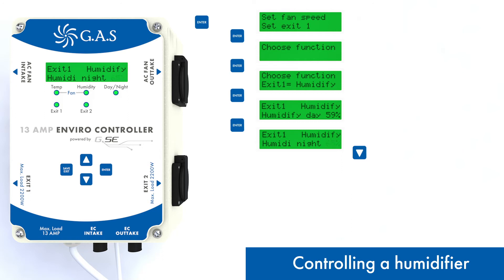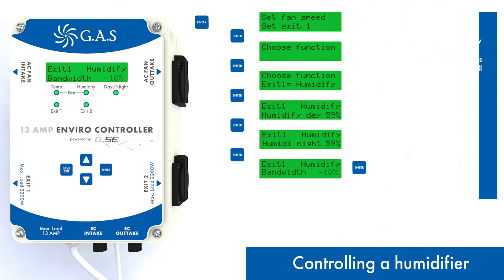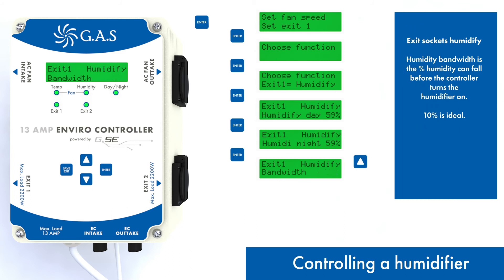Make sure the Humidify setting is below the humidity value you set for your fans. Bandwidth is the percentage the humidity can drop before the controller will turn the humidifier on. A 10% bandwidth is advised.